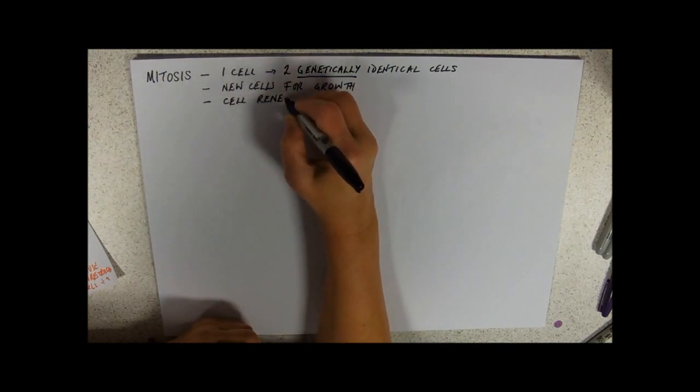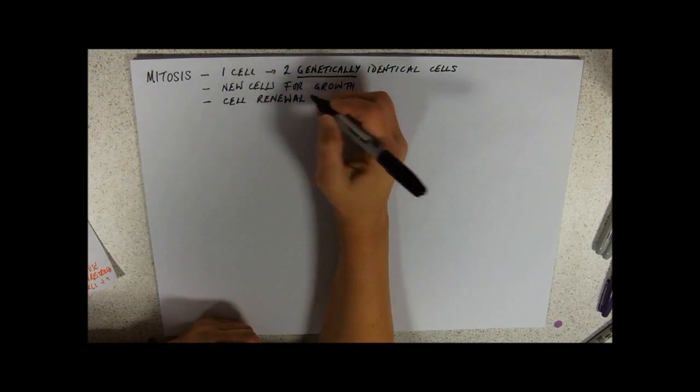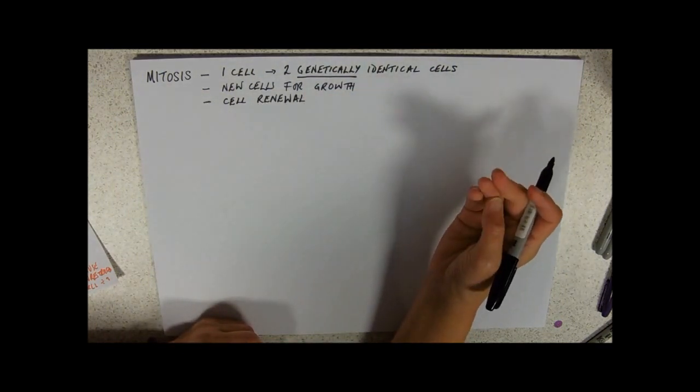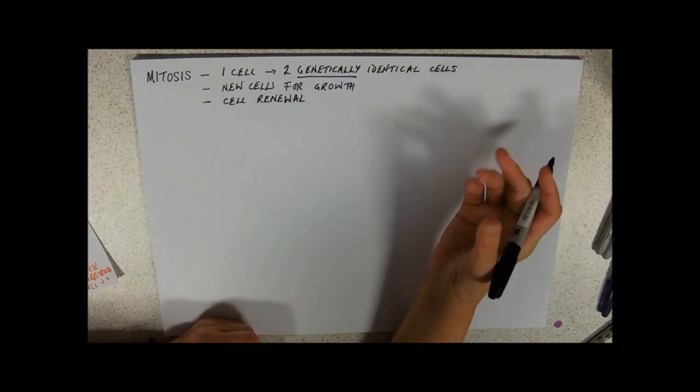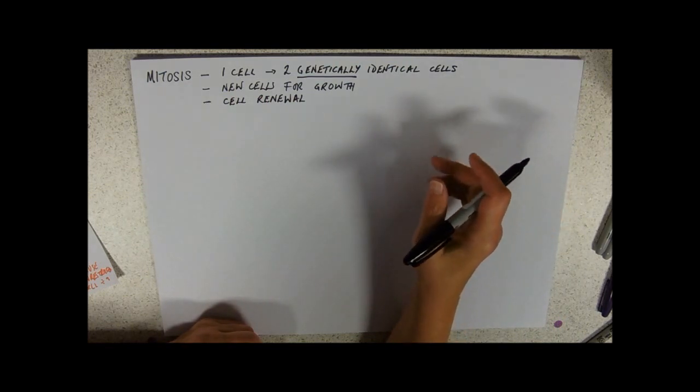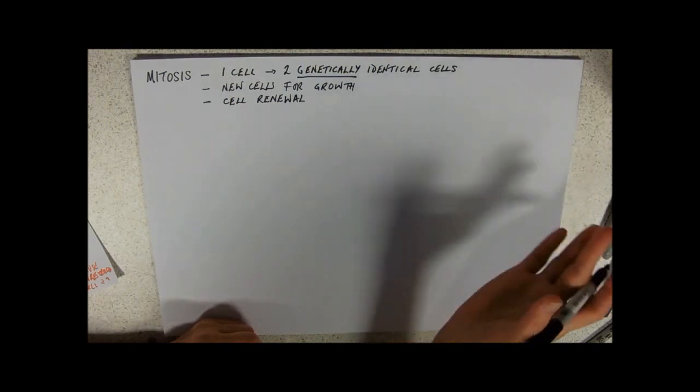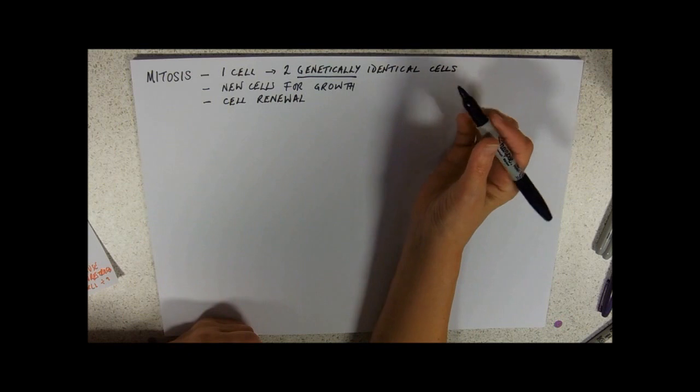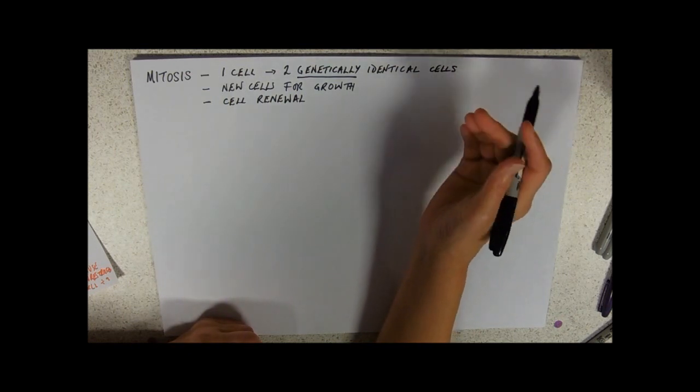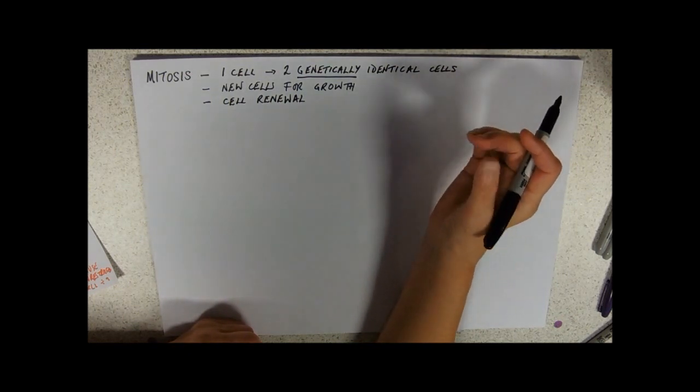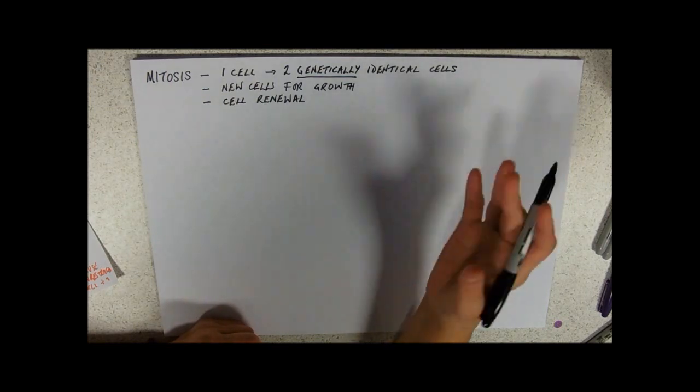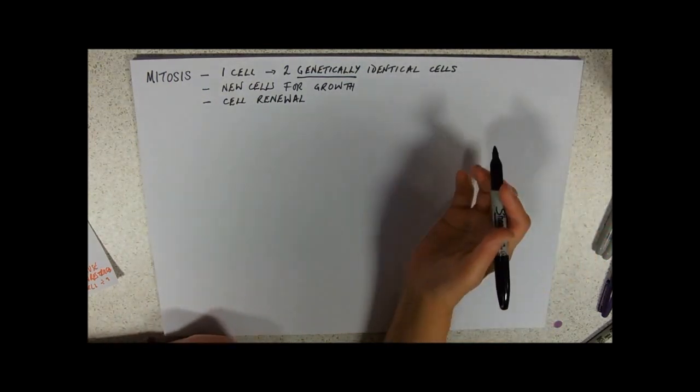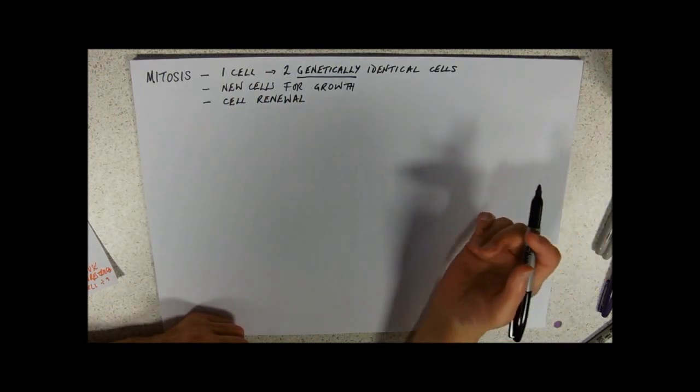When you eat something, it scrapes off the cells that line your cheeks and esophagus, and they need replacing. So cell renewal can be continuous. Your skin, for example, is continually renewing itself. Bits are dying and falling off, and you're replacing the cells from mitosis underneath the skin.